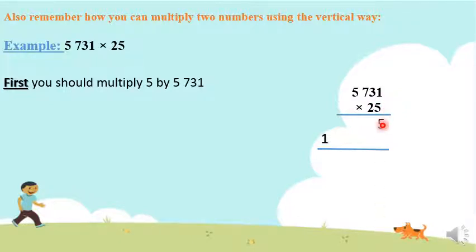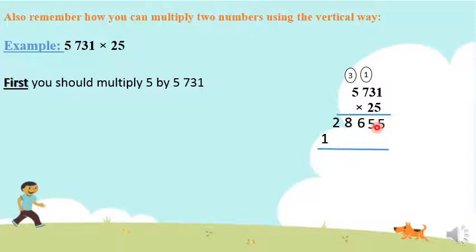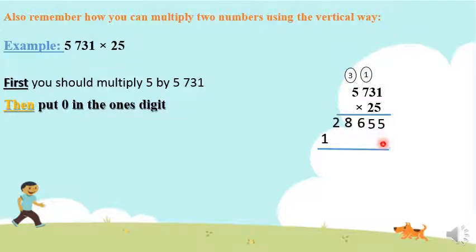5 times 1 is 5. 5 times 3 is 15 — write 5 and carry 1. 5 times 7 is 35, plus 1 is 36. And 5 times 5 is 25, plus 3 is 28. Then, we put 0 or leave an empty digit because we want to move from ones to tens.